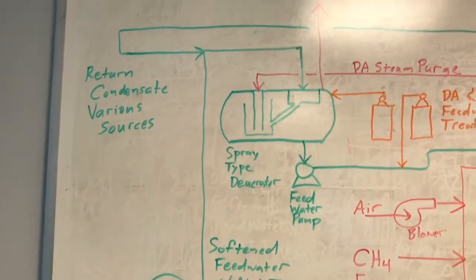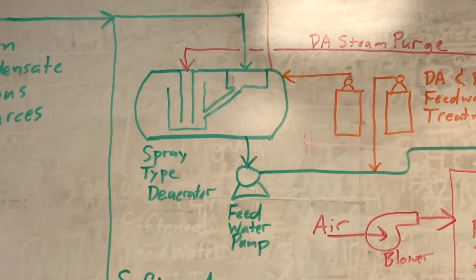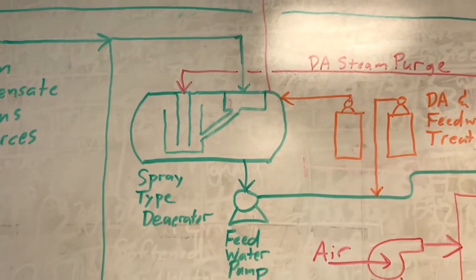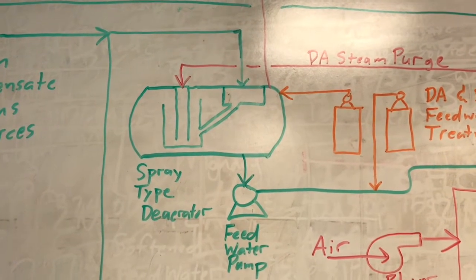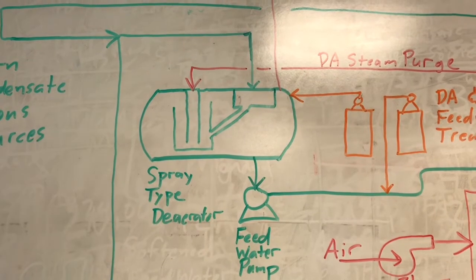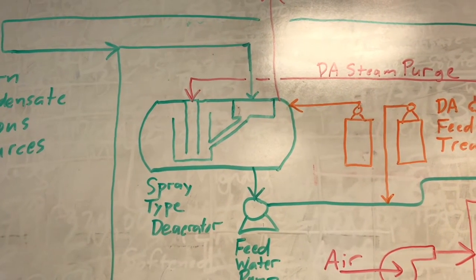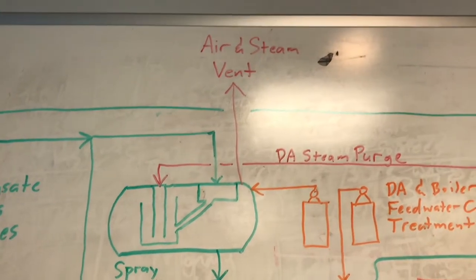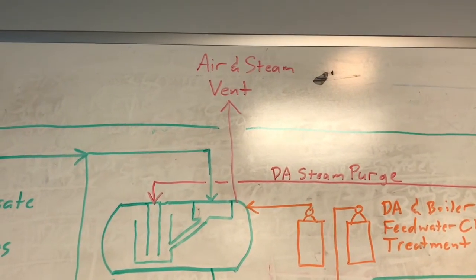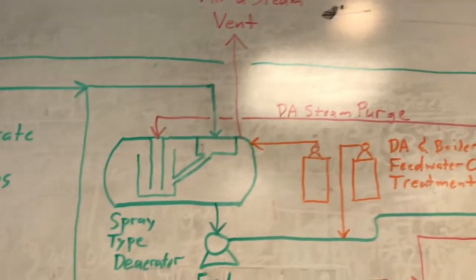From there, the softened water goes into what's called a deaerator. We have a spray-type deaerator, where the water comes into a tray-type system, drops down into what looks like a bucket, and is sparged with steam. The purpose is to heat up the incoming water to drive off any dissolved oxygen and carbon dioxide — which cause corrosion issues in boilers — through the vent. We'll get back to the steam purge later.